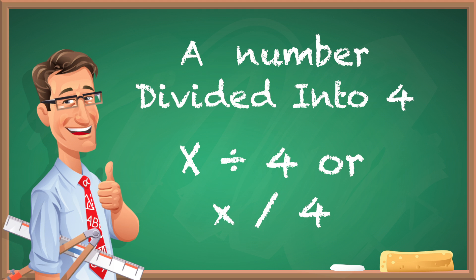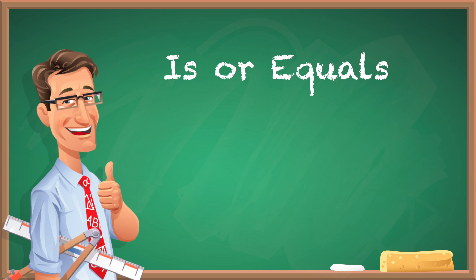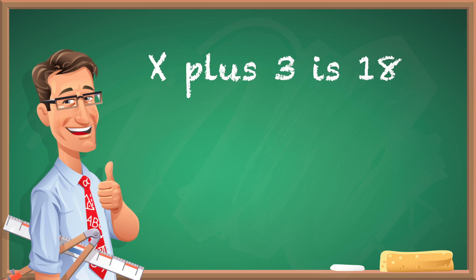If you see the words 'is' or 'equals,' those two things mean the same thing—you're going to have an equal sign. So if you see 'x plus three is 18,' it means x + 3 = 18.